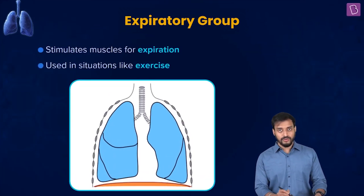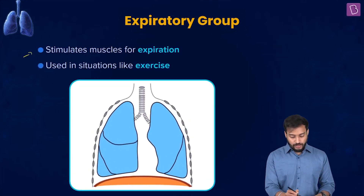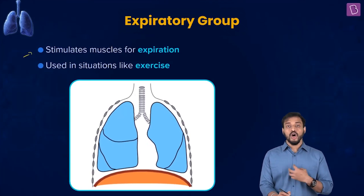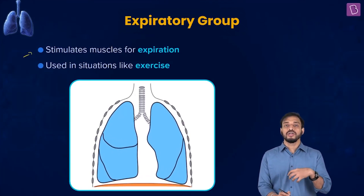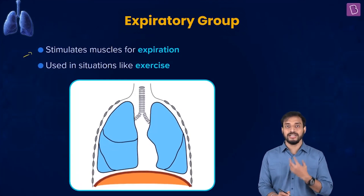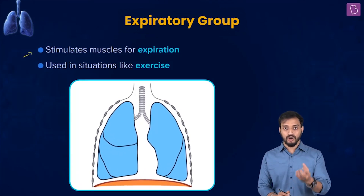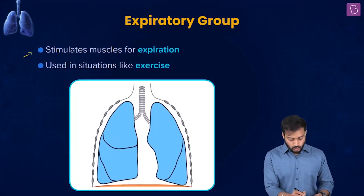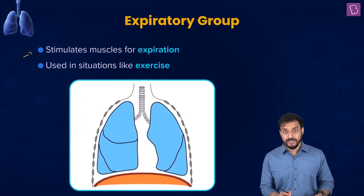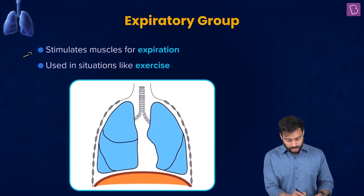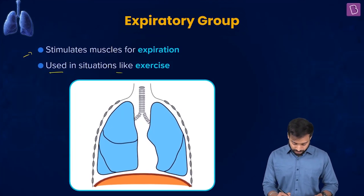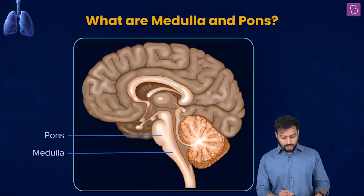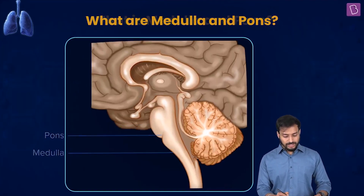The expiratory group — of course the reverse one — stimulates muscles for expiration. All the changes required for the muscles to help in the expiration process, that is breathing out, will be regulated by the expiratory group. It is used in situations like exercise.